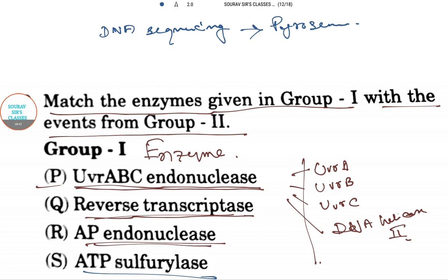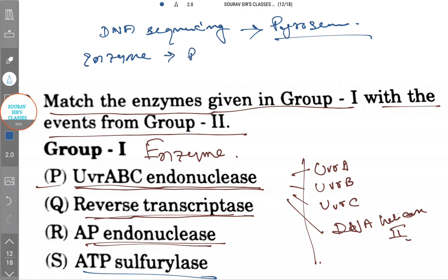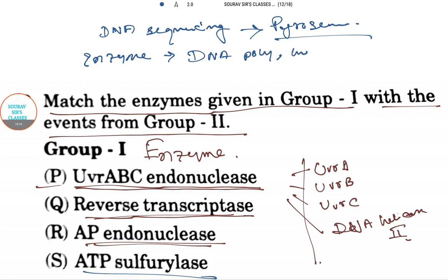This sequencing is done by using some enzymes - they are like DNA polymerase, luciferase, and this ATP sulfurylase, also called ATP-S, that catalyzes the reaction.